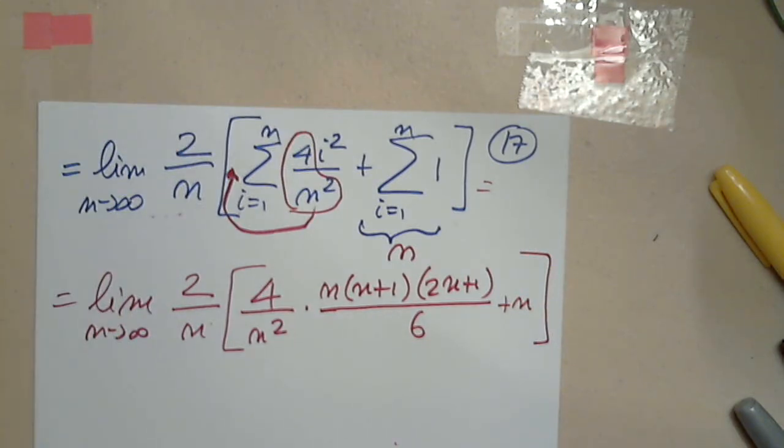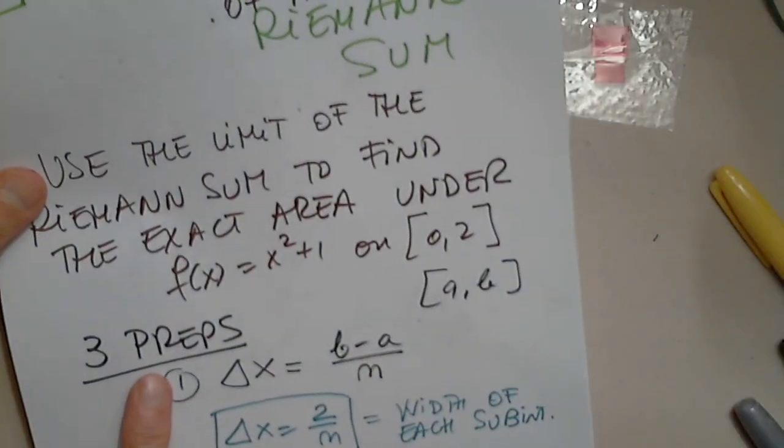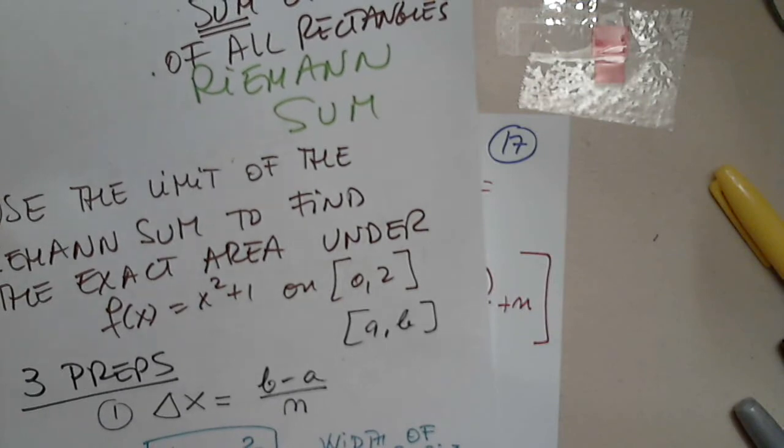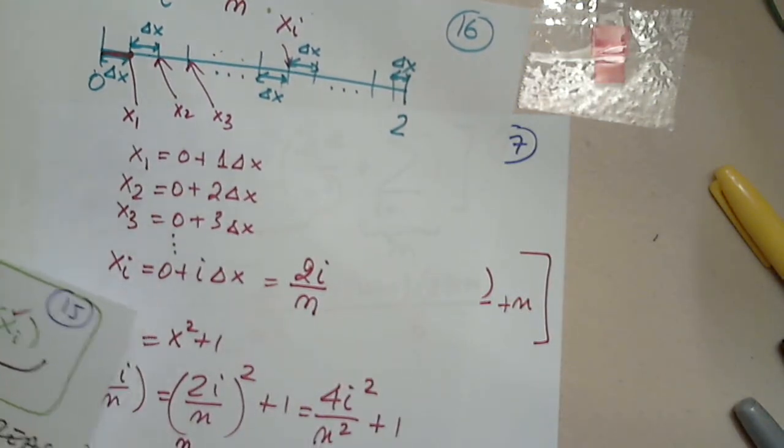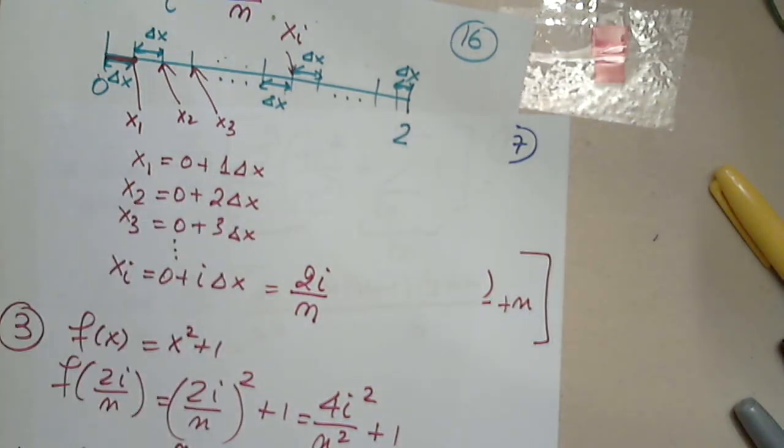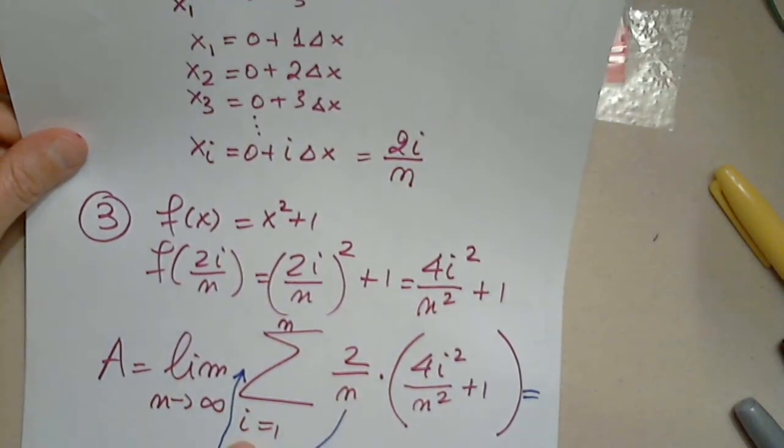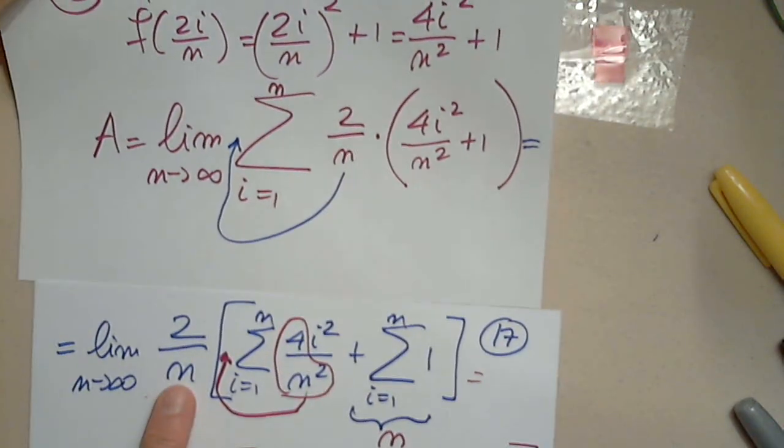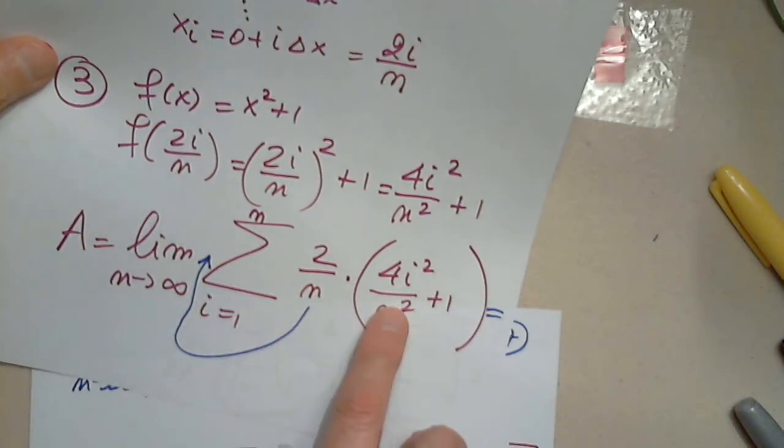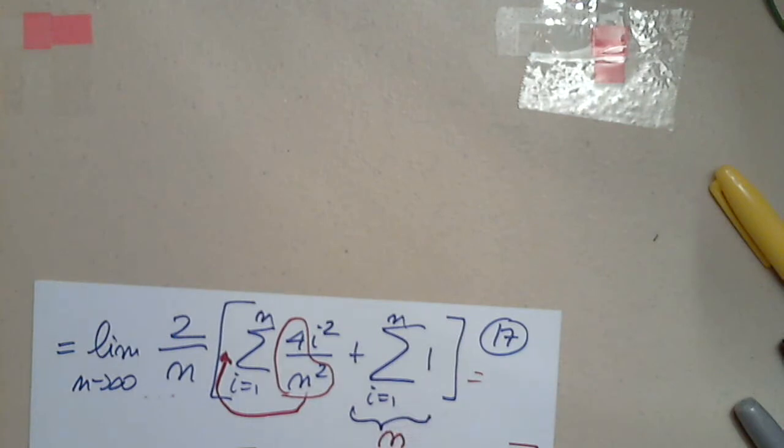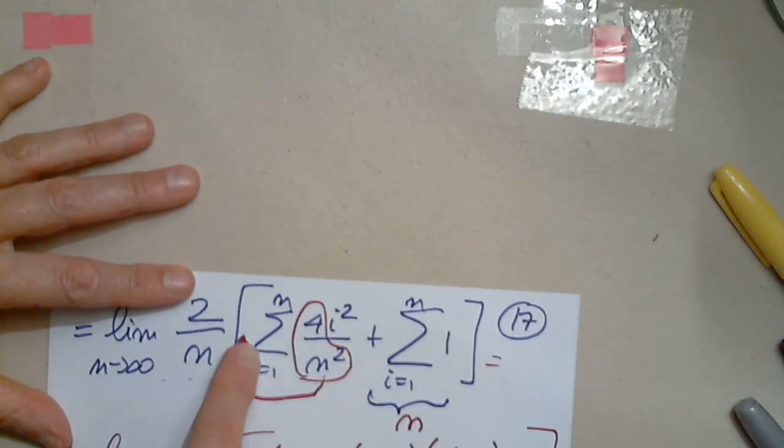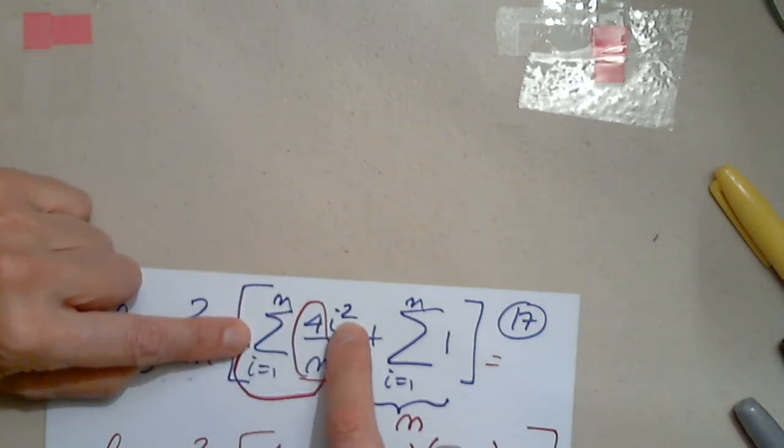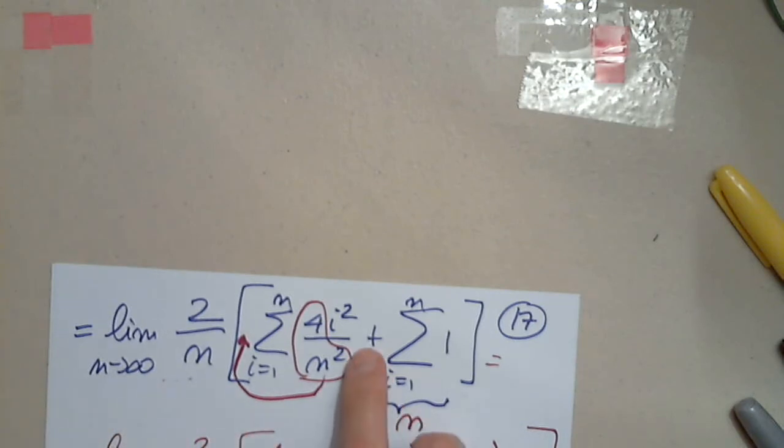So let's regroup for a second before we continue. In order to determine the exact area using the limit of the Riemann sum, I have three preps. First, I have to determine the width of each subinterval. Then I have to determine x_i and then plug it in the function so that I can put these two together: 2 over n and the function of x_i. And then plus n.